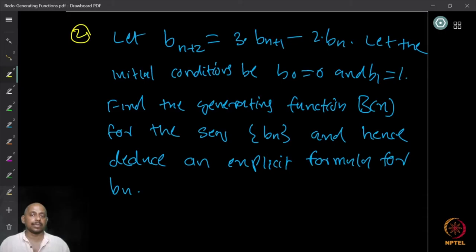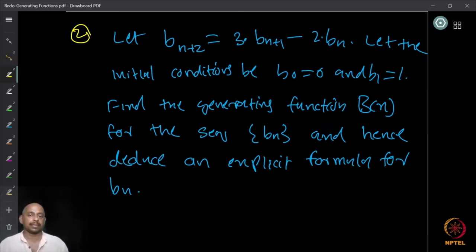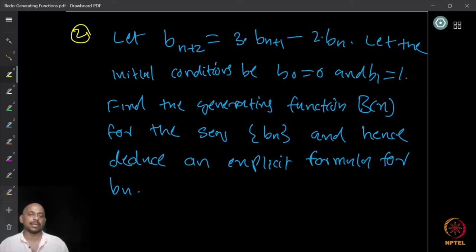The second question asks you to solve the recurrence relation: B_{n+2} = 3·B_{n+1} − 2·B_n, with initial conditions b_0 = 1 and b_1 = 1. Use this information to find the generating function B(x) for the sequence b_n, and deduce an explicit closed formula for b_n from the generating function.